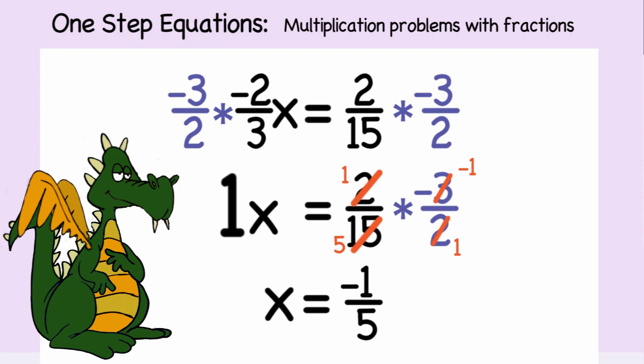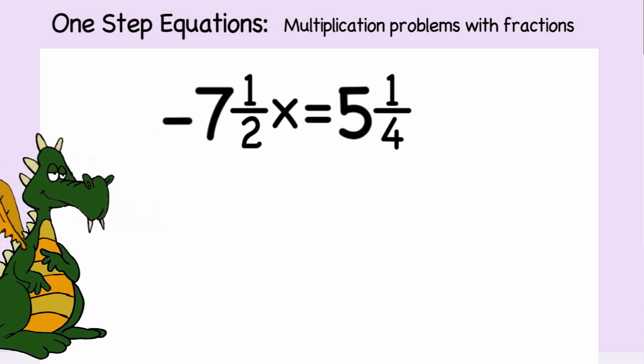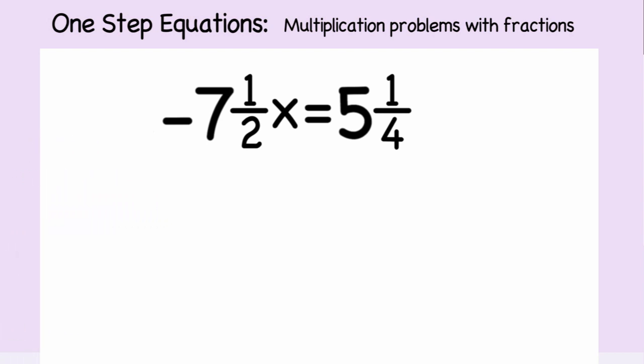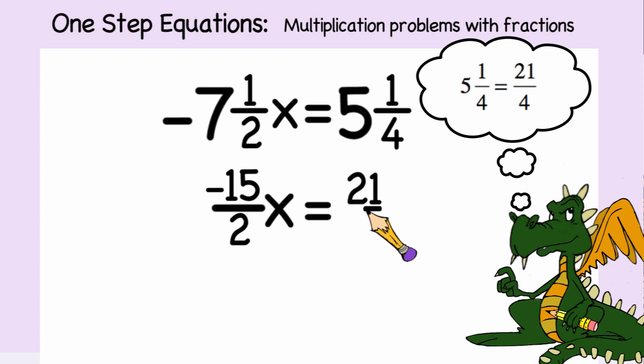Now let's try the problem negative seven and one-half x is equal to five and one-fourth. Well, we can't find the multiplicative inverse of a mixed number, so we need to write all the mixed numbers in the equation as fractions. Therefore, negative seven and one-half becomes negative fifteen-halves, and five and one-fourth becomes twenty-one over four.